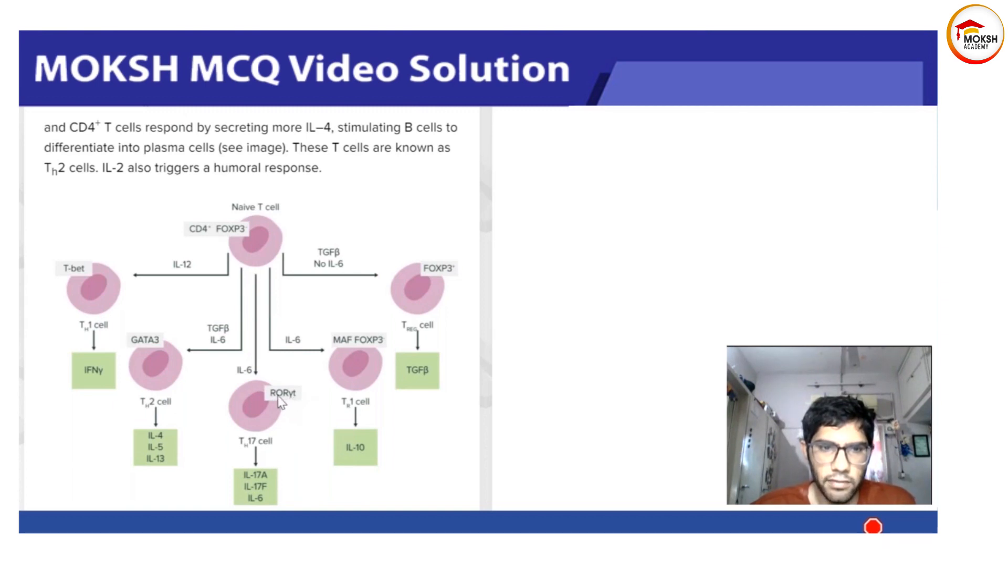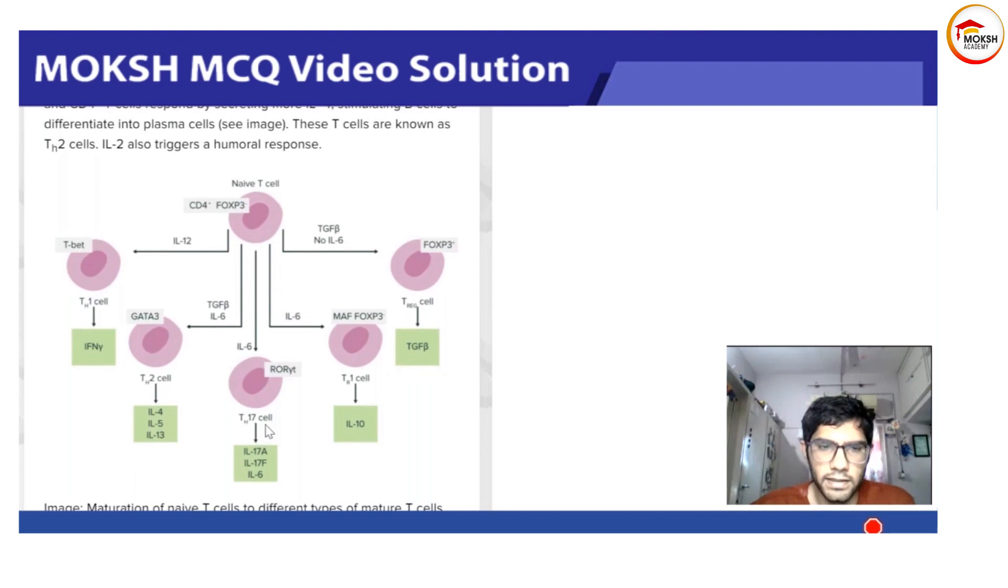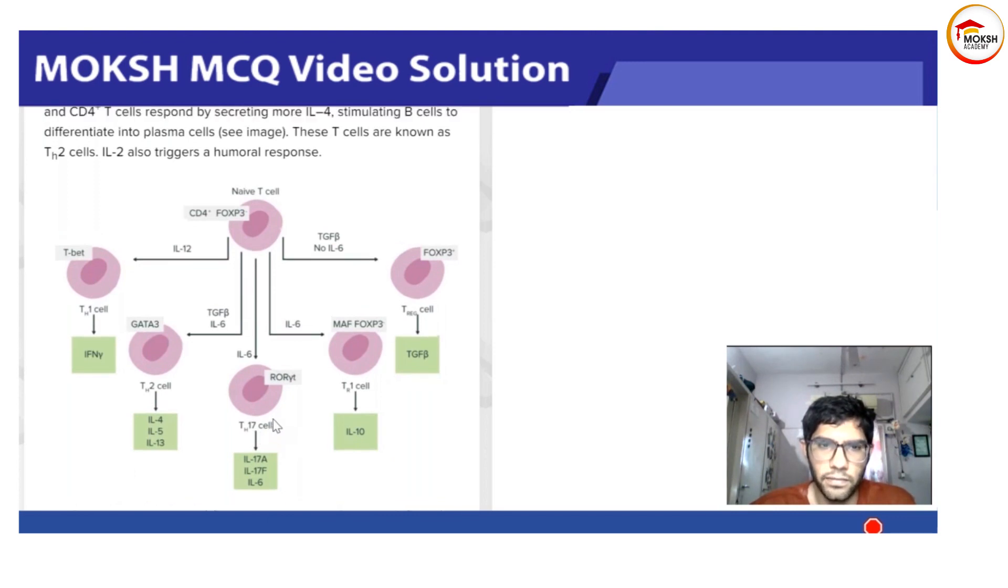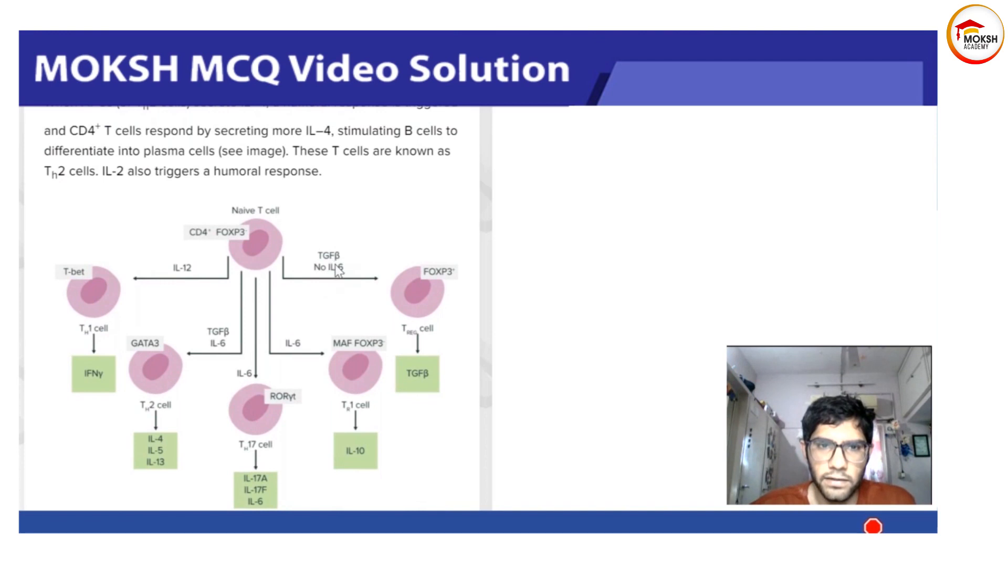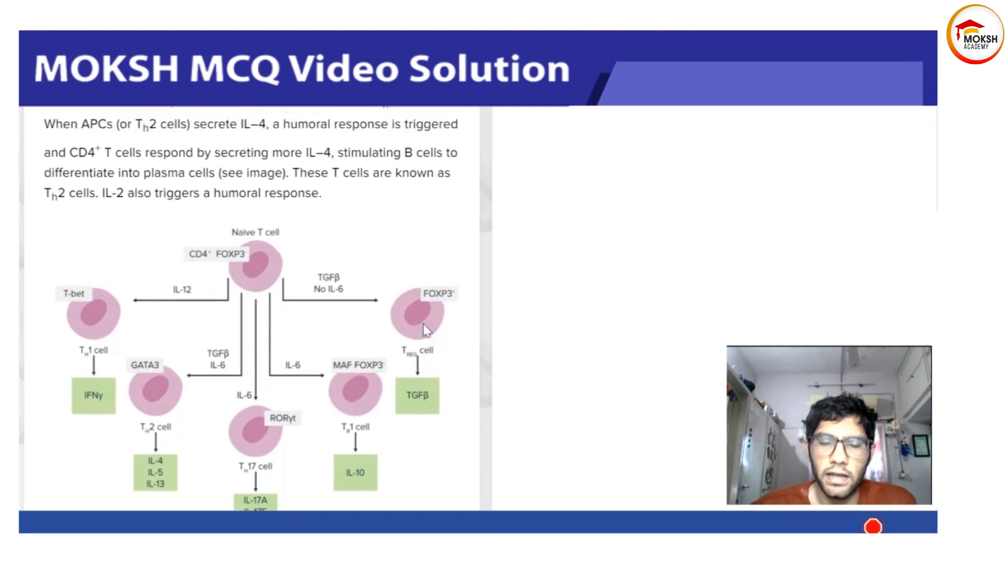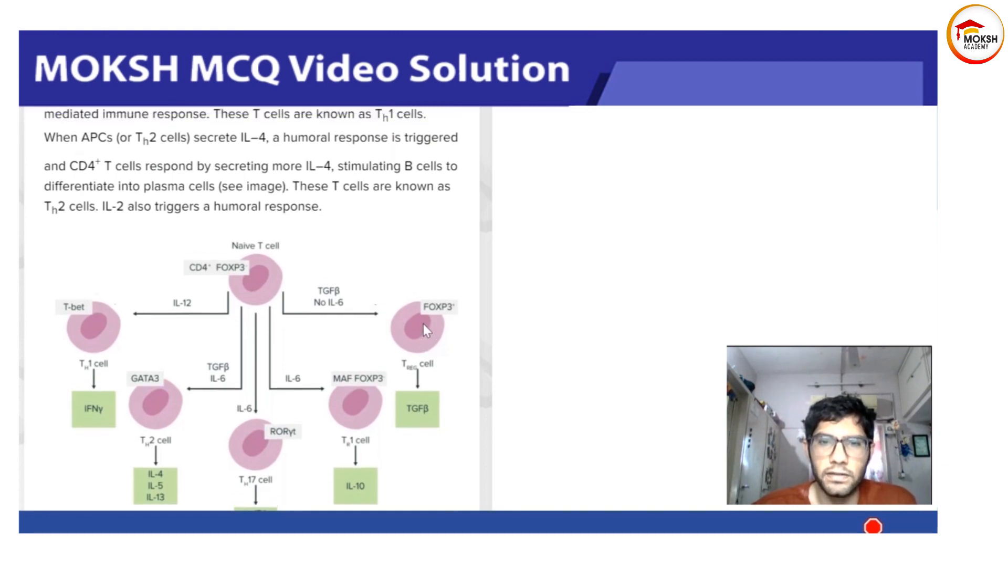If we have TGF-beta and no IL-6, then FOXP3 is activated. This is a T regulatory cell. It does not have any response toward infectious agents, but it regulates other T cell functions.